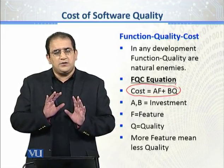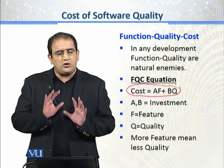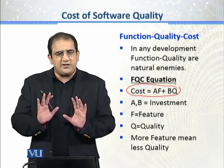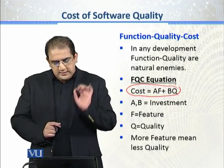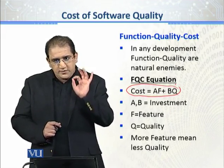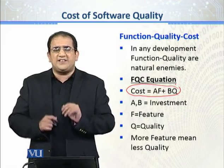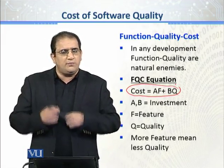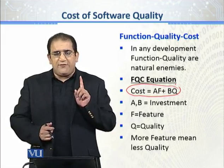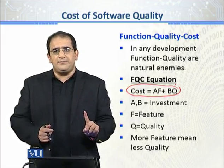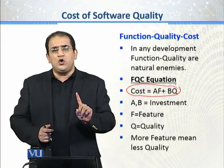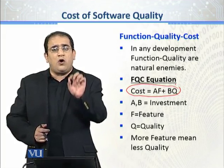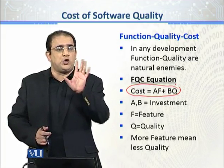I will try not to use more mathematical expressions. A اور B وہ amount ہے جو customer نے investment دی ہے۔ F is the functionality and Q is the quality which you want to ensure.